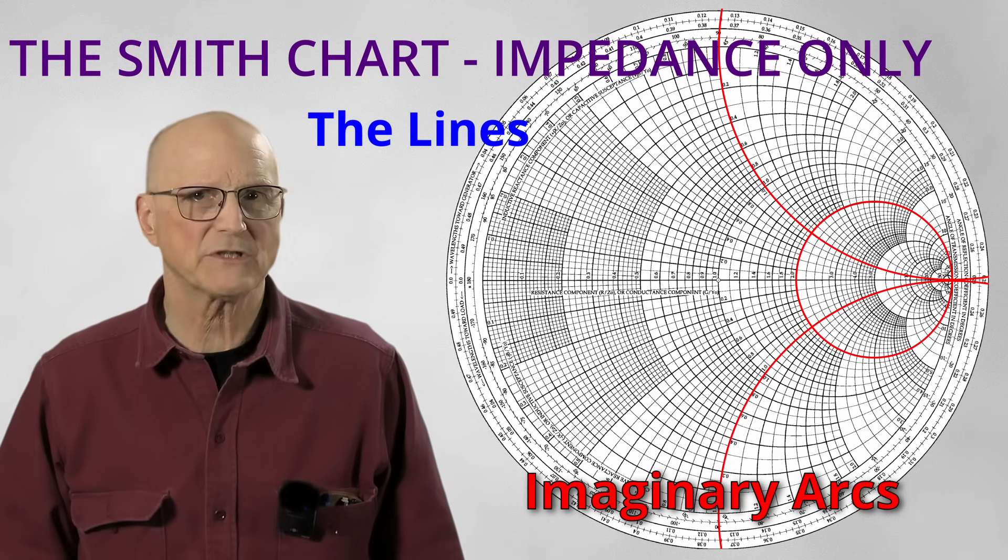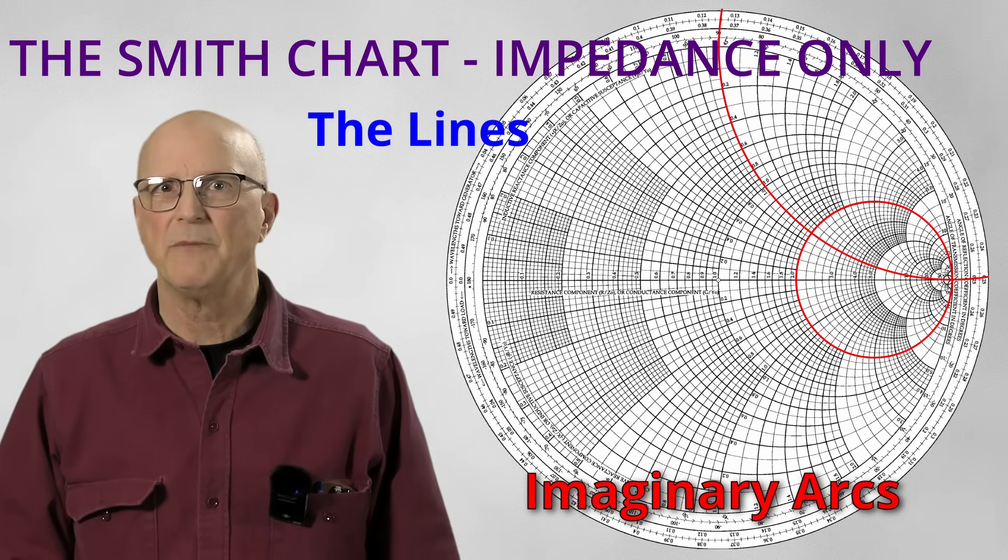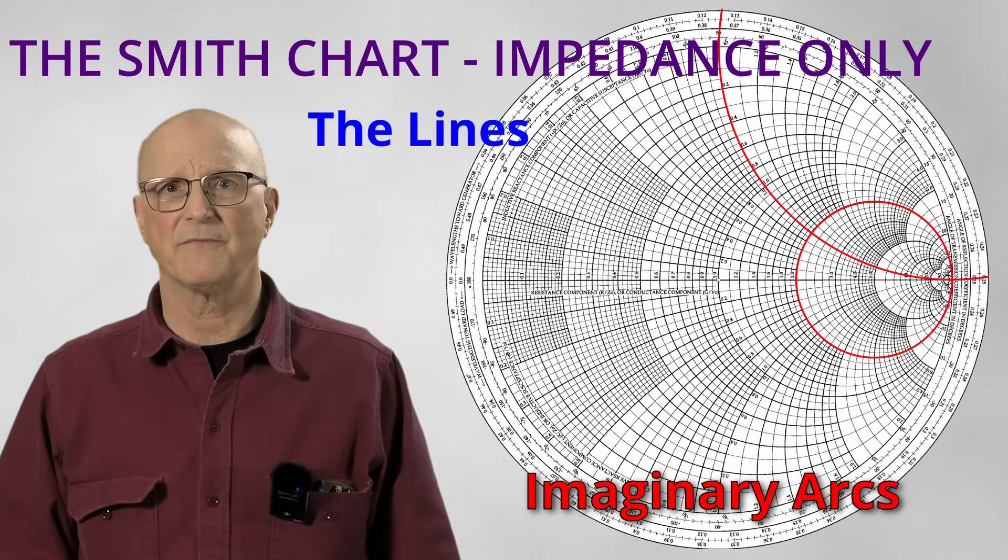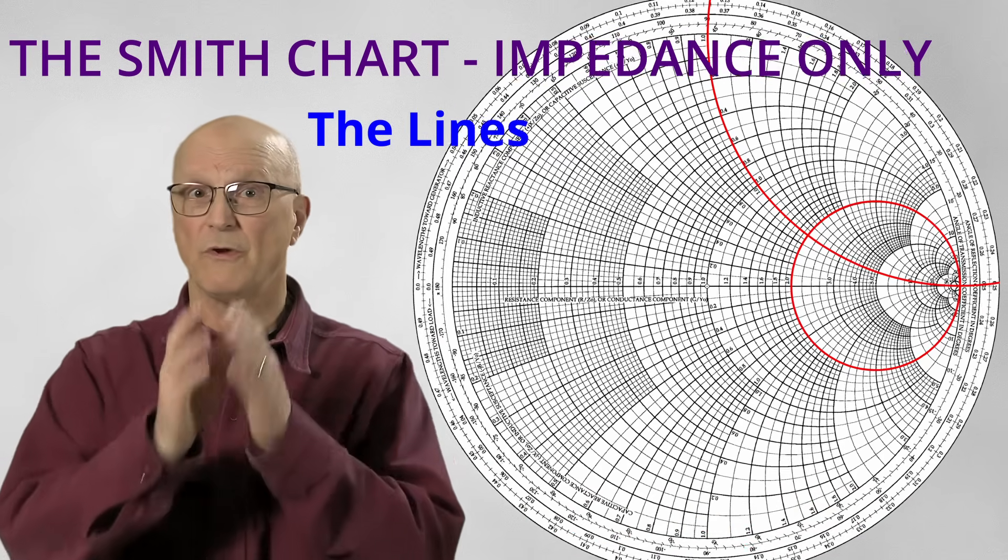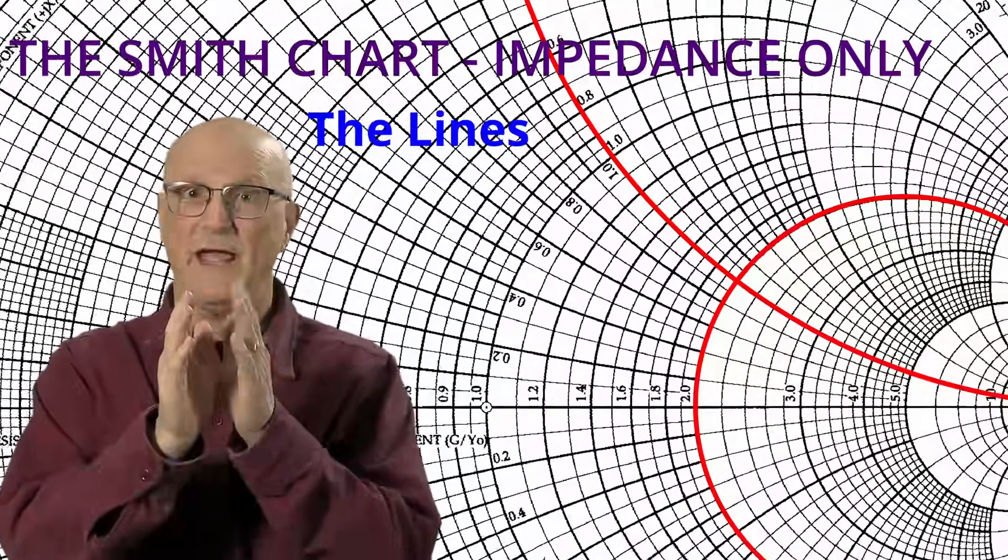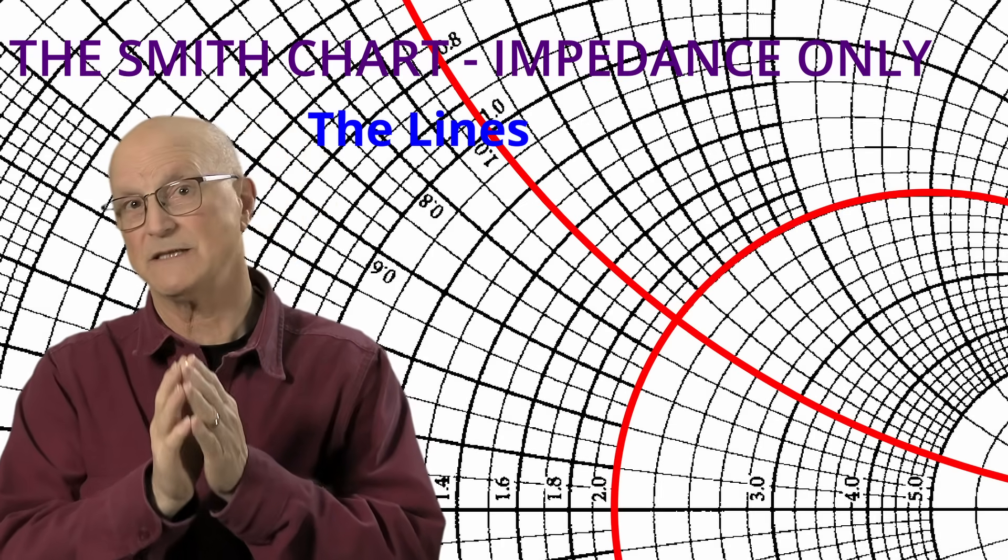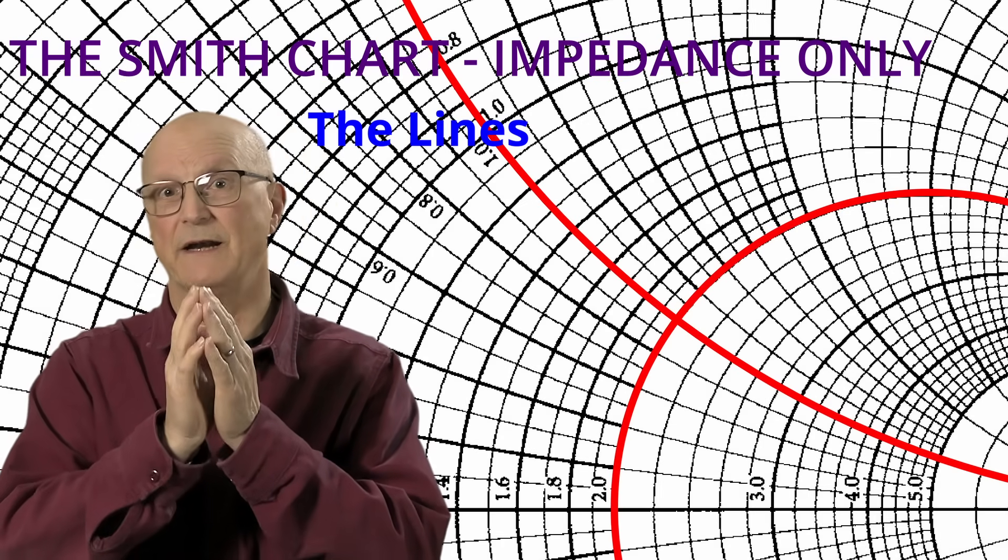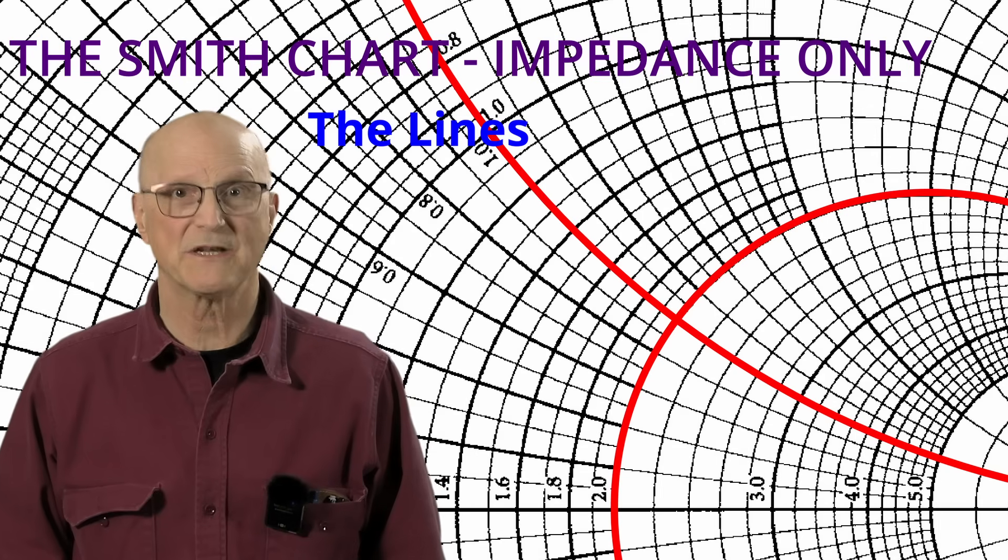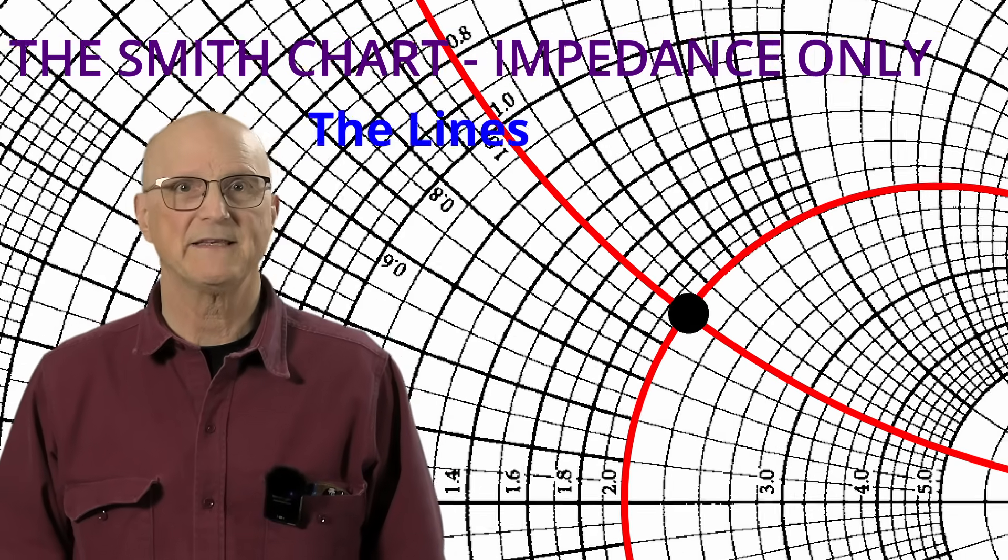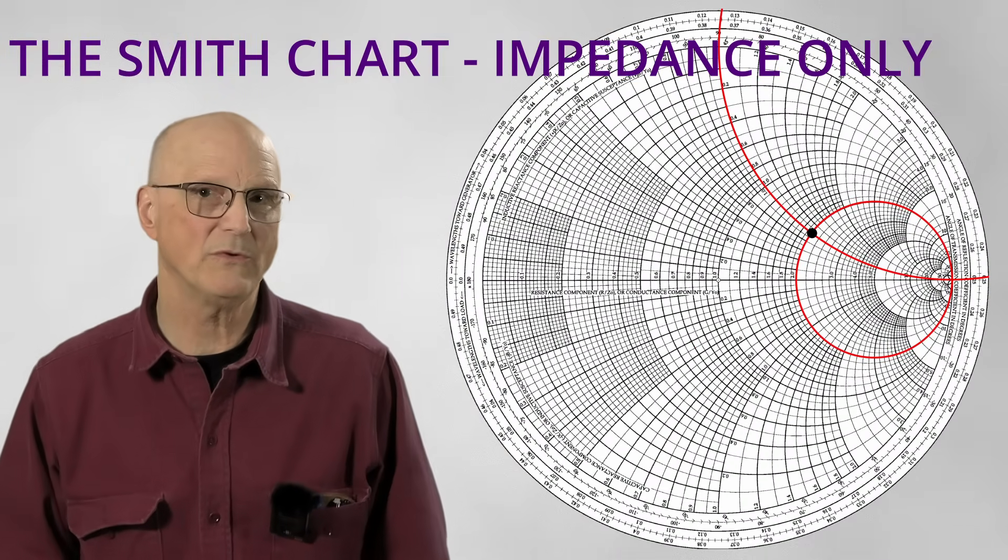Here we see the positive and negative 1.0 arcs. The reactive portion of our impedance will be plotted above the equator because it is positive and thus inductive. Now, let's put these two things together. Where the resistance circle and the reactance arc meet for any given impedance is the place where the impedance is plotted on the Smith chart. We can see that spot for our example impedance right here.